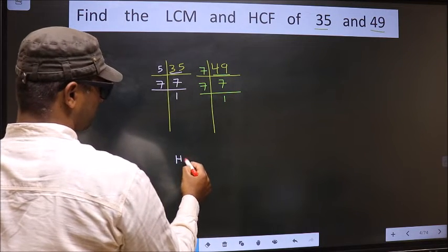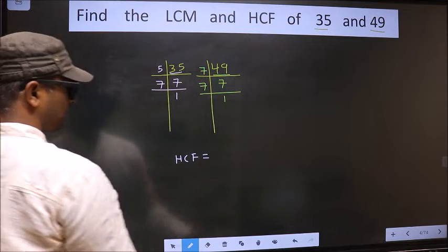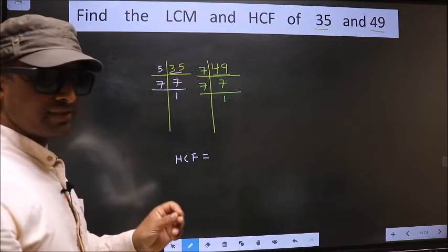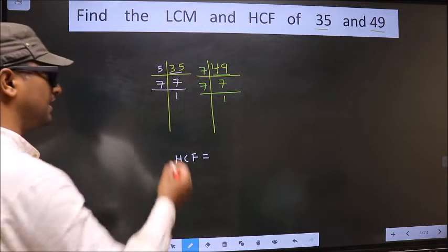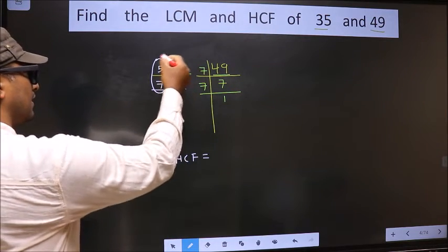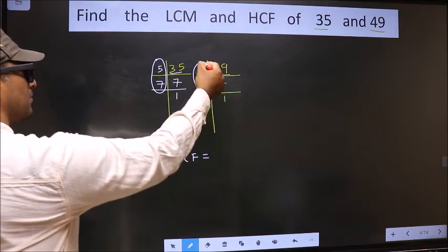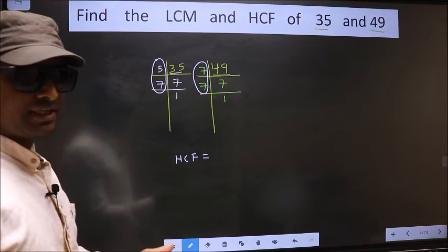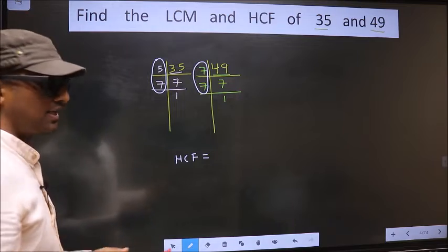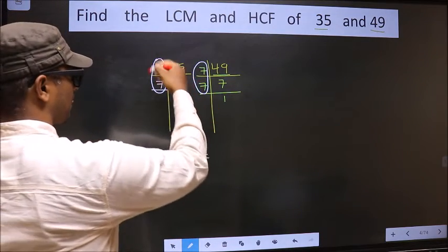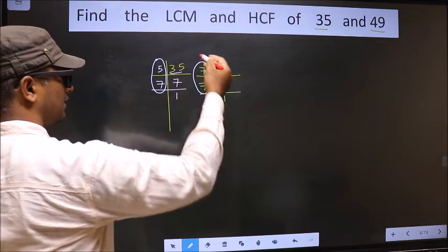So our HCF is... HCF is the product of numbers which should be present here and also here. I repeat, HCF is the product of numbers which should be present in these two places, here and also here.